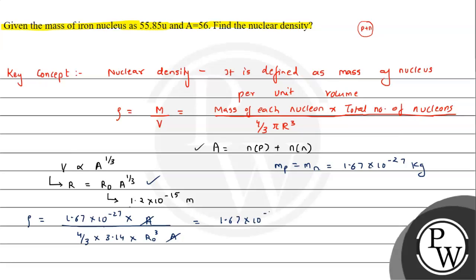Finally we have the expression 1.67 times 10 raised to minus 27 into 3, divided by 4 into 3.14 into R0 cube. R0 is 1.2 times 10 raised to minus 15, all cubed.